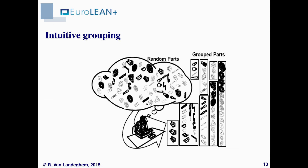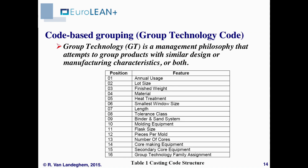The problem with intuitive grouping is that it is not easy to replicate across different people. The most widely used code-based grouping is the group technology code — a standard codification that describes the characteristics of a product using code sequences. Different types of products have different code systems; for instance, this is an example for a casted product. Products with similar characteristics will have similar codes on these positions, and computers can easily sort them out. Here you see a visual example of such a coding.